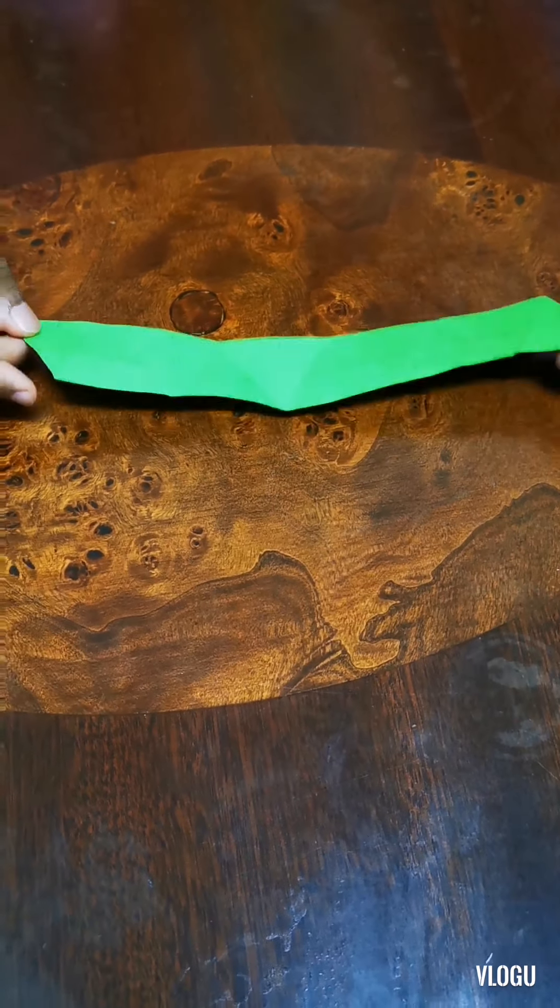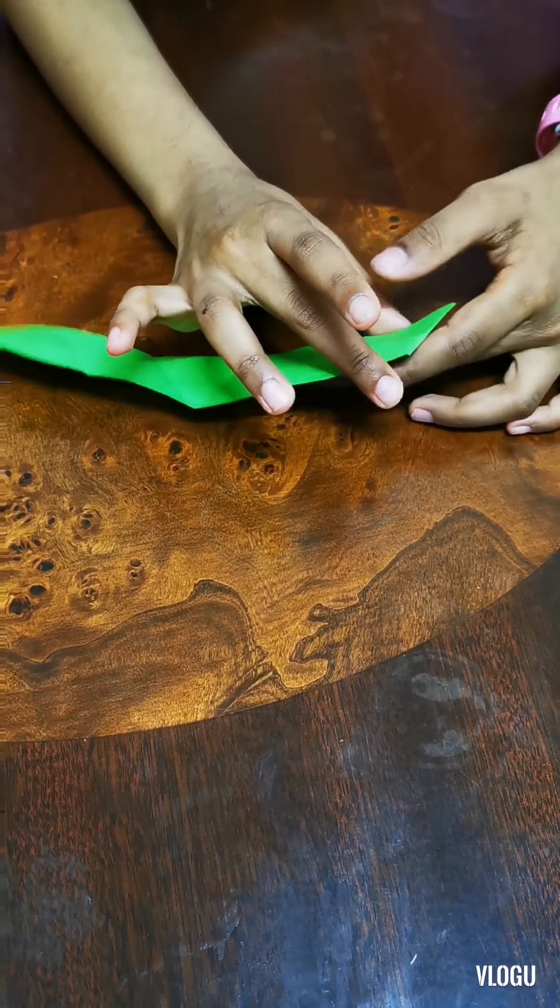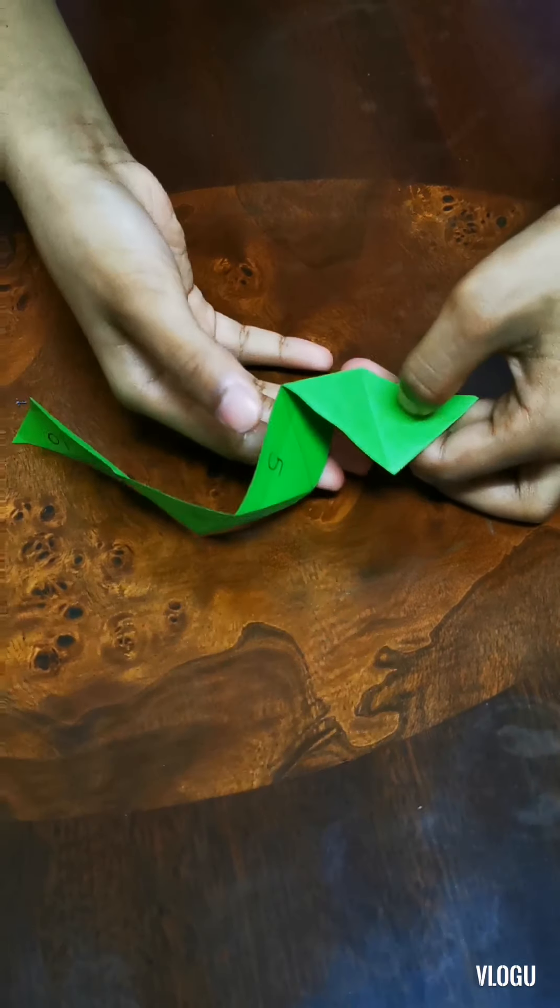Now, turn the paper strip. Fold the number 1 triangle downwards. Leave 2 and 3. Turn the number 4 upwards.